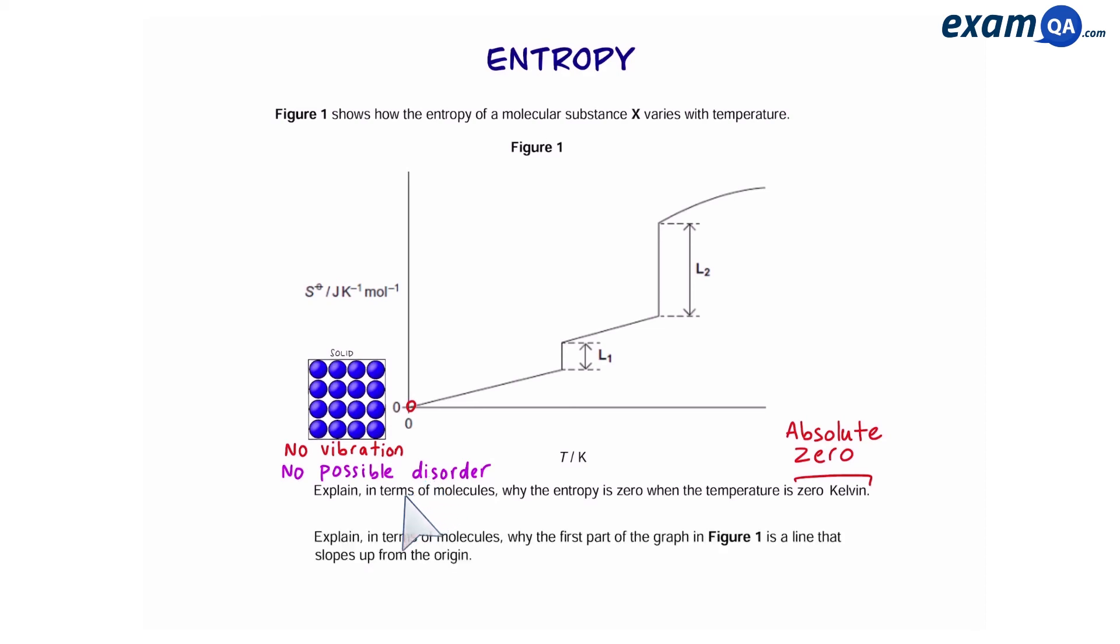Okay here's the next part of the question. Explain in terms of molecules why the first part of the graph is a line that slopes up from the origin. So the question is talking about this part of the curve. Now up to here it's still a solid. However, we can see that the entropy has increased. So this must mean that the particles have gained some energy, so they are vibrating and as a result there's going to be some randomness.